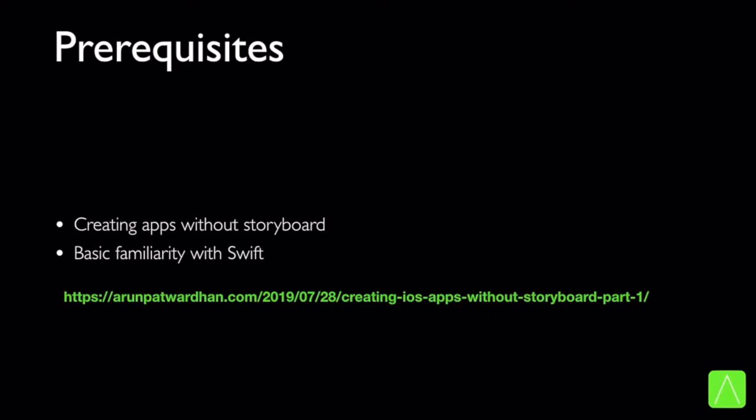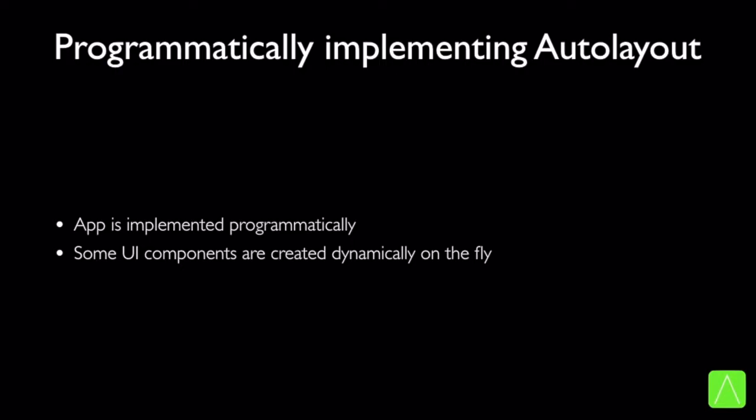Now let us look at how we can implement auto layout programmatically. The first question that would come to any developer's mind is: why would I need to implement auto layout programmatically? This is a valid question. It is very easy to implement auto layout via storyboard and it works well. However, there are some situations where this won't be possible or may not be easy to implement — for example, if the app is implemented programmatically, if we are creating UI components on the fly, or if we need to create constraints that change on the fly depending on certain conditions, including and beyond size classes.